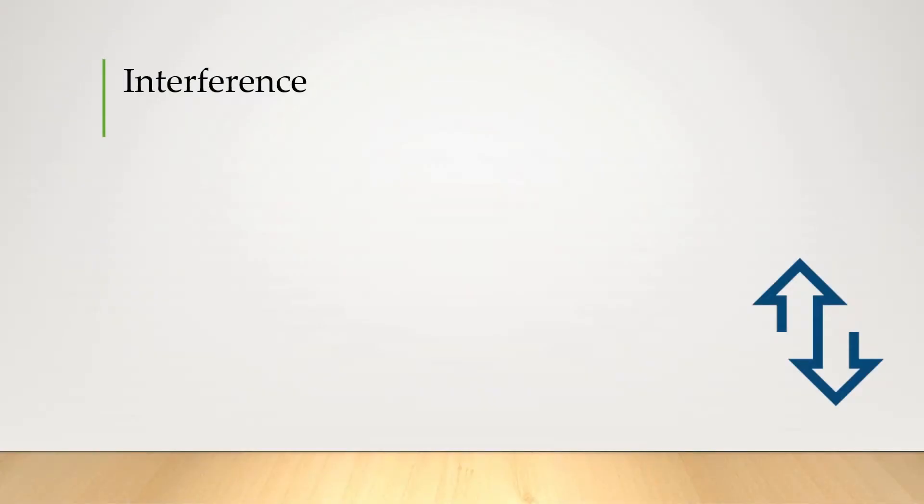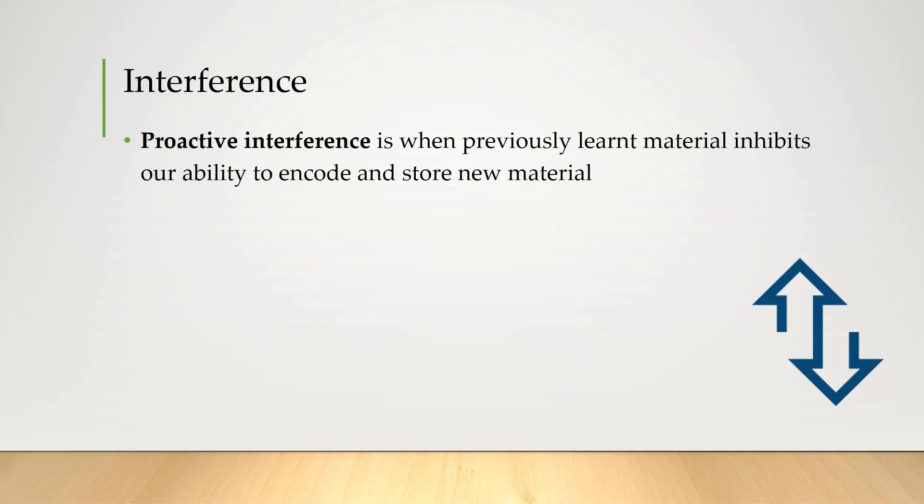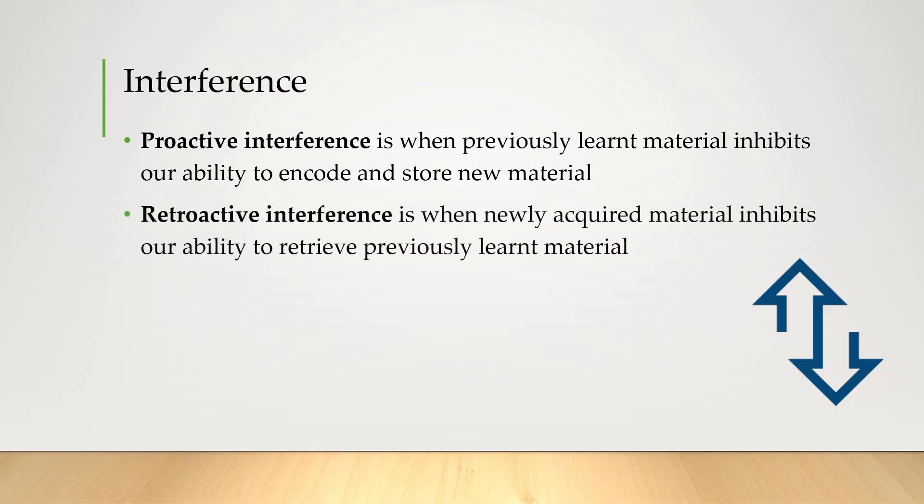In psychology we call this concept interference and there are two types. Proactive interference is when older material that you learned inhibits your ability to encode and store new material, and retroactive interference is when new information that you learn inhibits your ability to retrieve previously learned material.